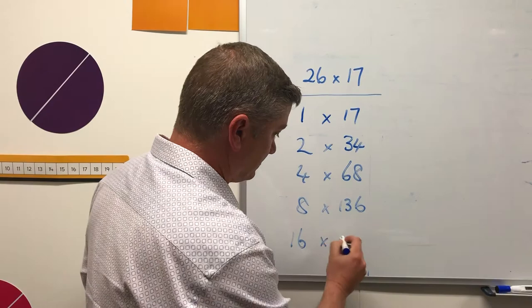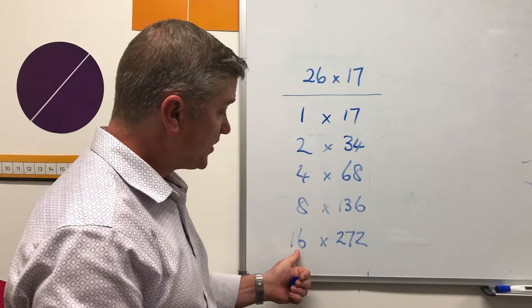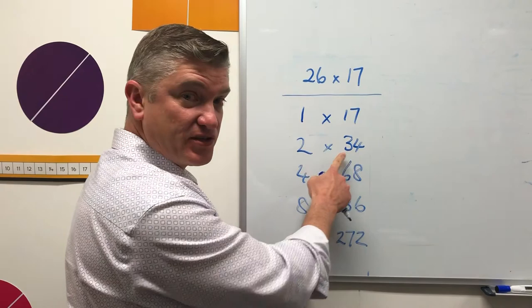And you stop doubling when you analyze what you've got here. I've got 1 17, 2 17s are 34, 4 17s are 68, 8 17s are... 16 17s are...